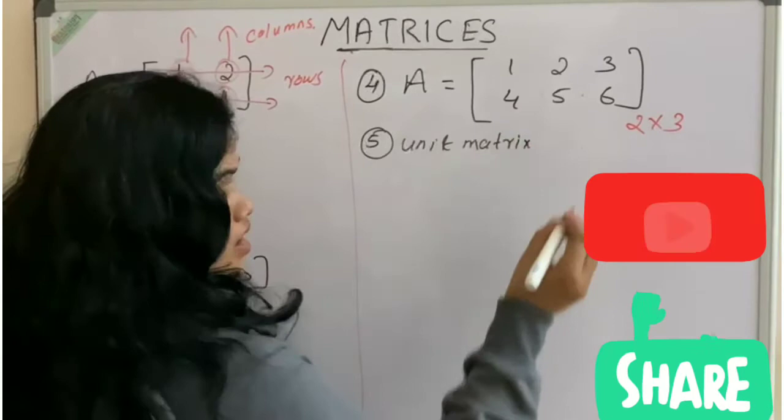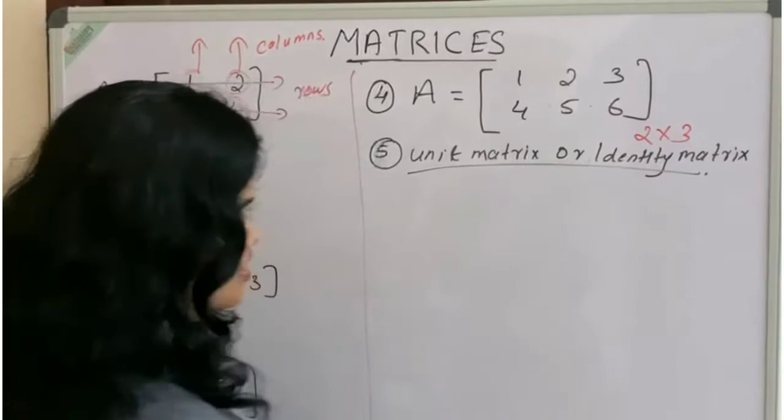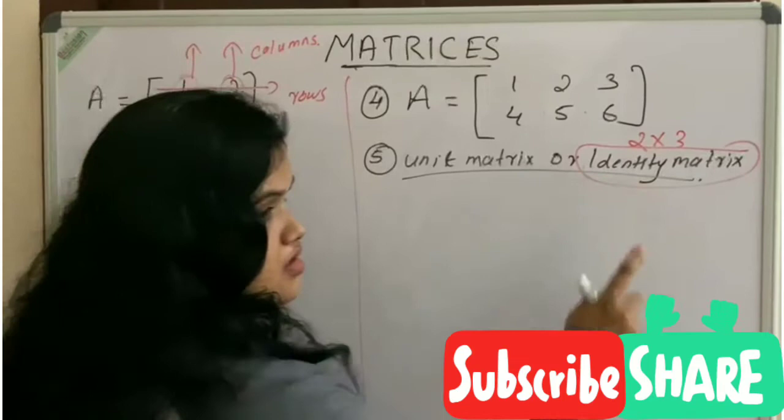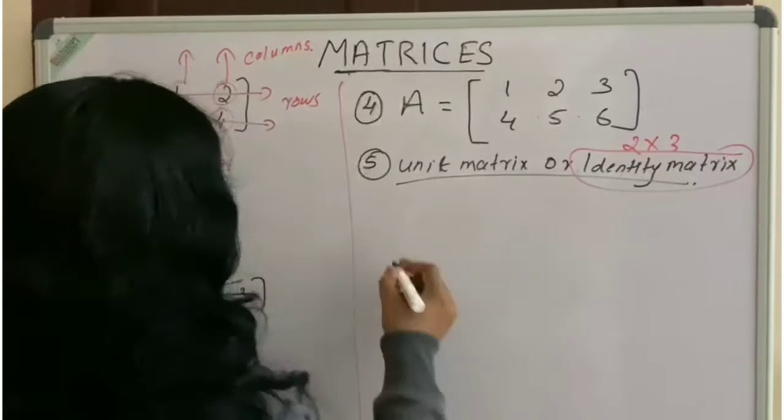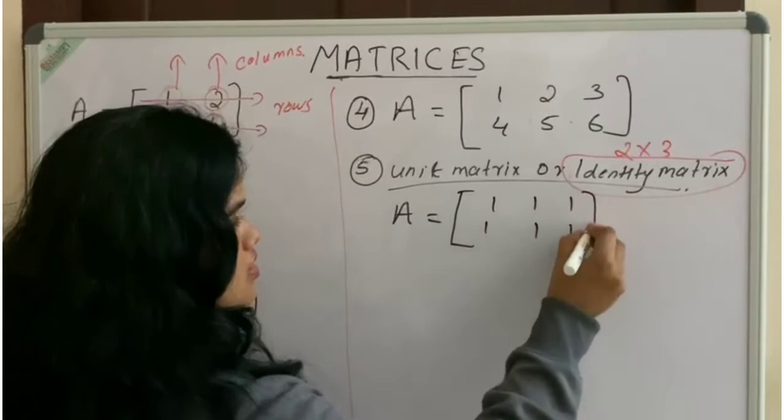Its other name is identity matrix. This name is very important because in some inverse applications, we use this name. Unit matrix is a matrix which has all the elements as unit. Unit means one. It is a unit matrix.